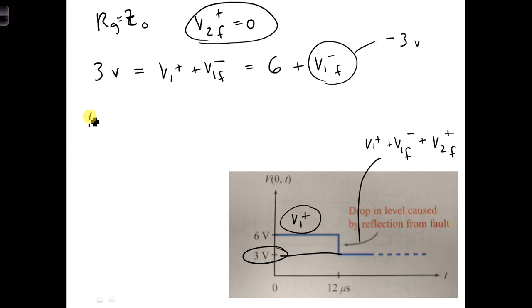Then, we need to find the voltage reflection coefficient at the fault, and that is equal to V1F minus over V1F plus. We can plug in for V1F minus, we have minus 3 over 6, and that is equal to minus 0.5.